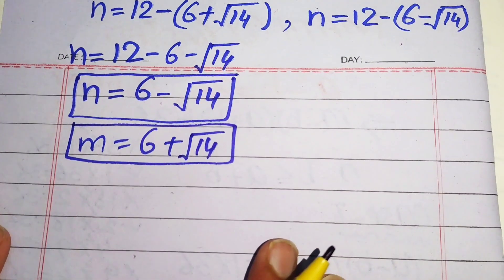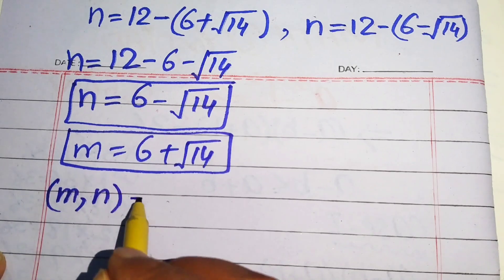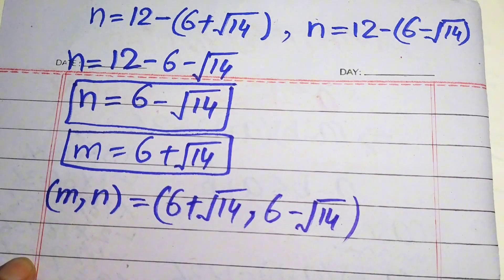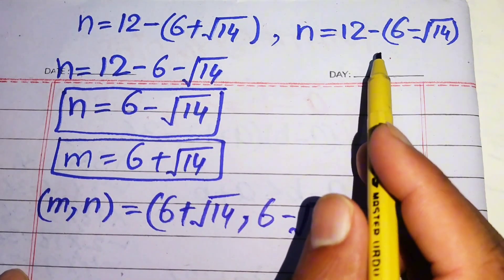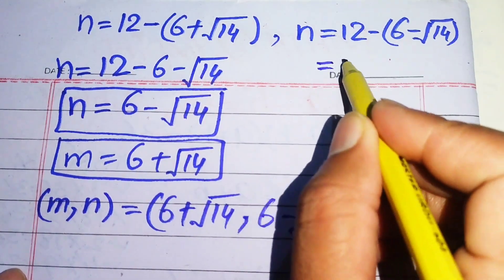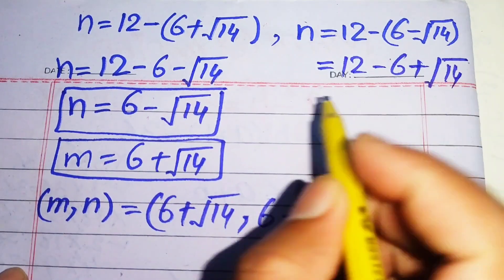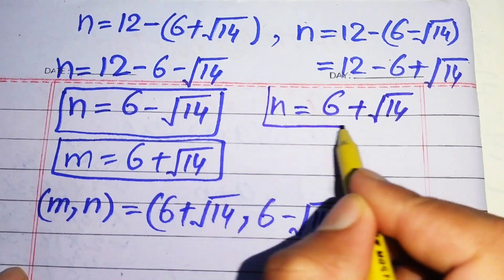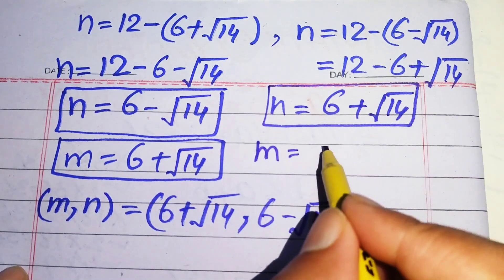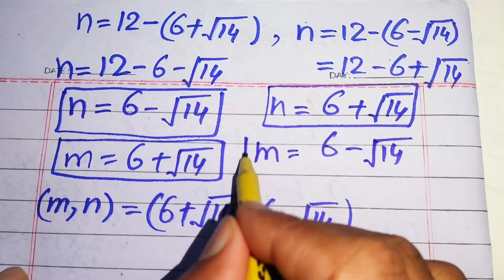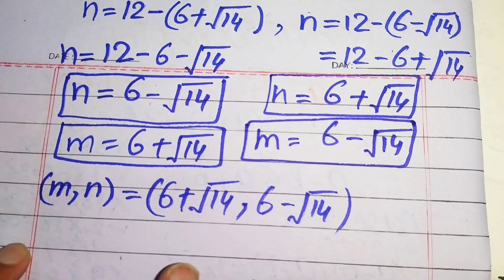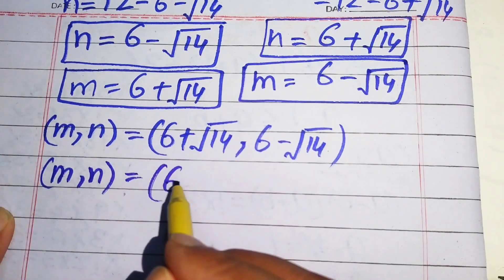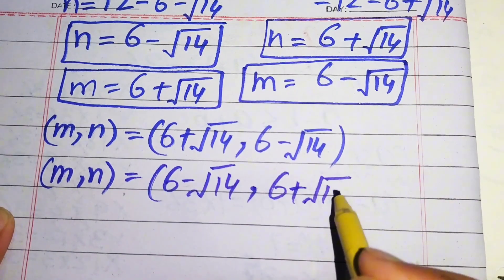The first solution is: (m, n) equals (6 plus square root of 14, 6 minus square root of 14). For the second case, n equals 12 minus (6 minus square root of 14), which gives 12 minus 6 plus square root of 14, so n equals 6 plus square root of 14. The second solution is: (m, n) equals (6 minus square root of 14, 6 plus square root of 14).